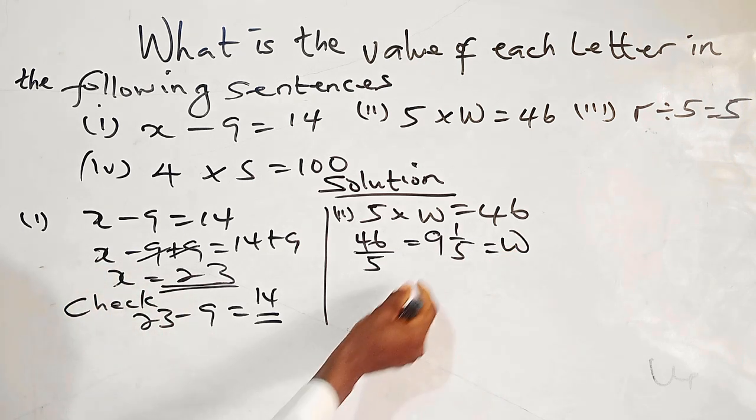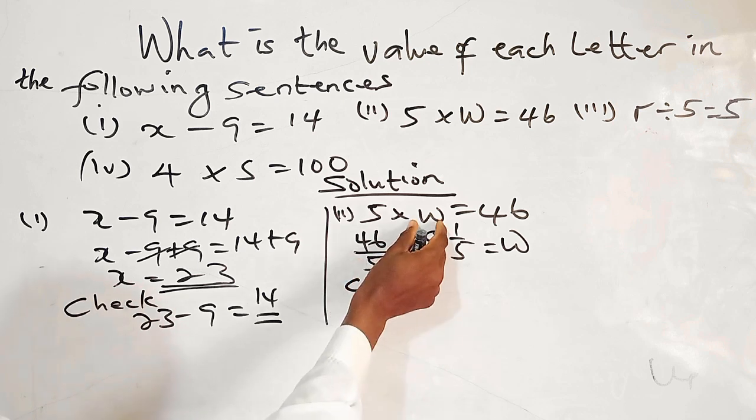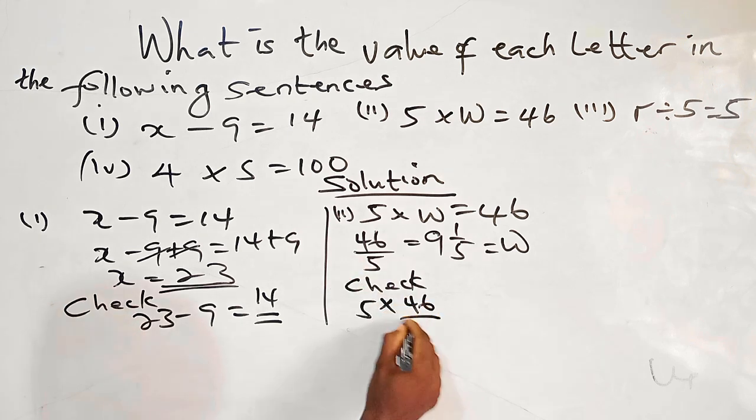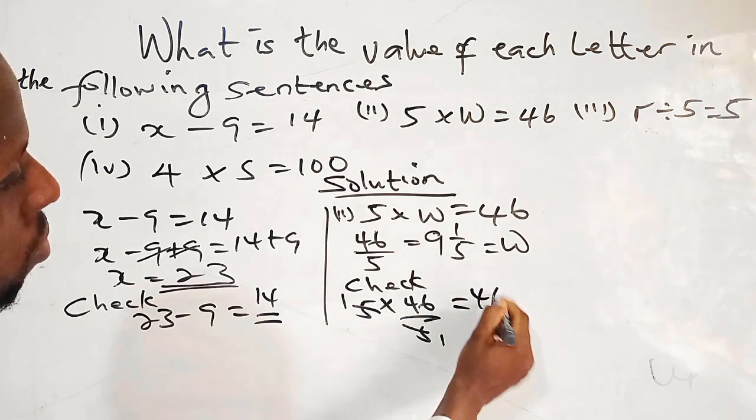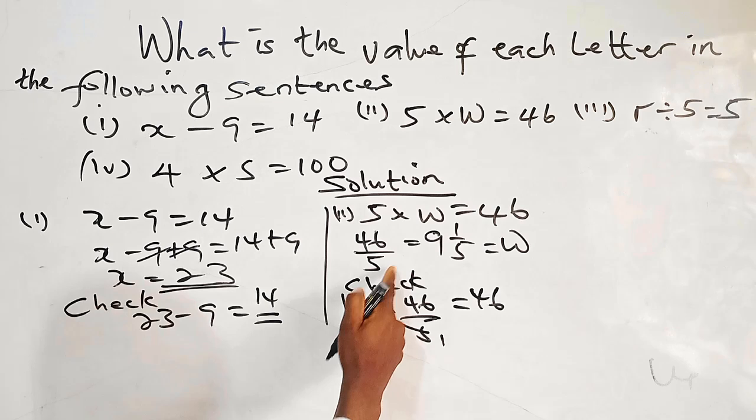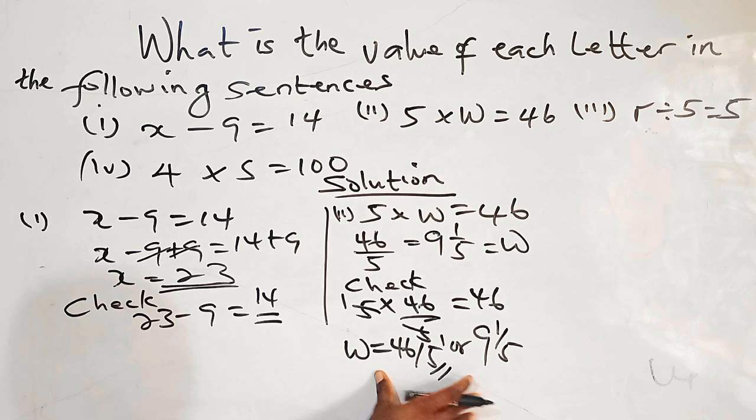Okay, so by the time we check, we put this back here and multiply it together, we must get 46. So we have 5 times 46 over 5. So by the time we divide, 5 is 1, 5 is 1. So 1 times 46 gives 46. So that means W stands for 46 over 5 or 9 and 1 over 5. That is W.